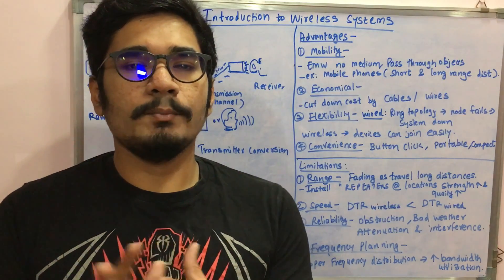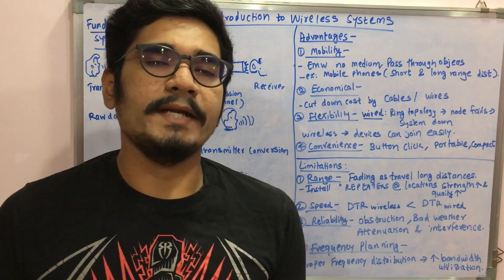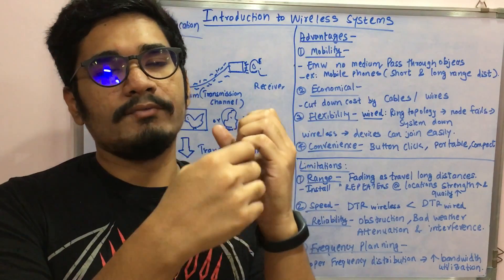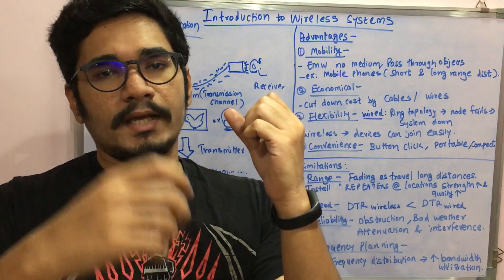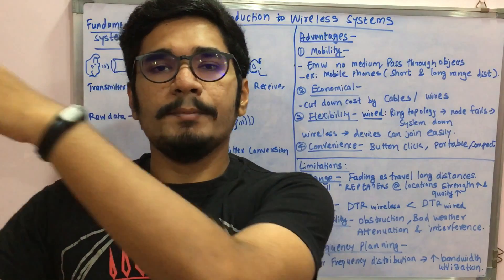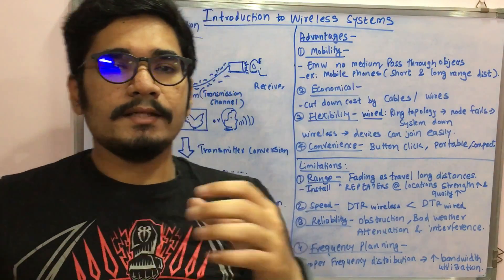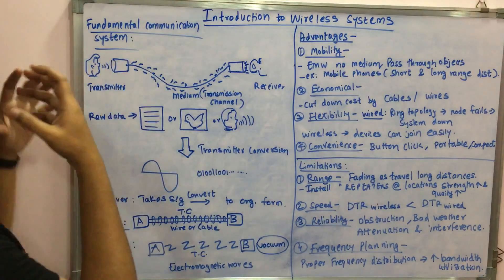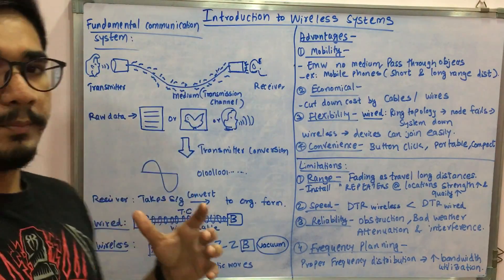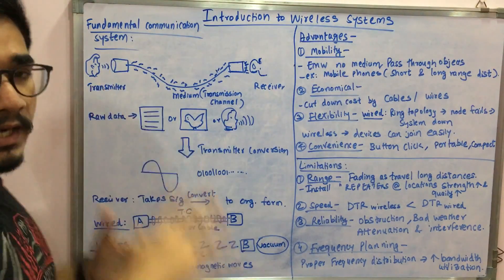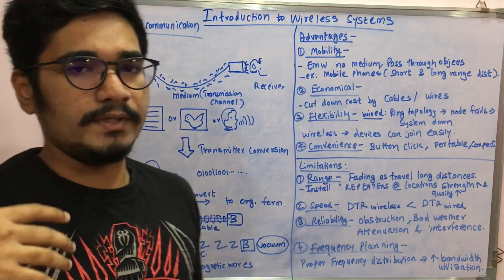Basically during our childhoods you might have played with a paper cup, and then you have attached a thread or string towards it. On the other end, you attach the same paper cup or a different type. One person would be saying something and the other person would be hearing at the other end. The person who is saying acts as a transmitter and the person who is receiving acts as a receiver.